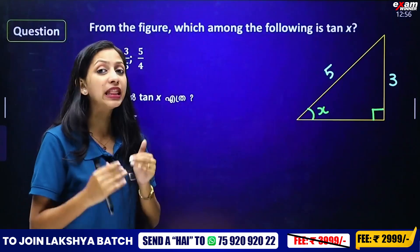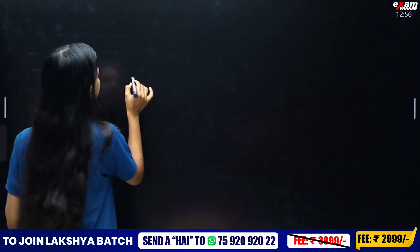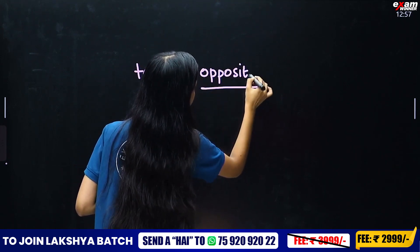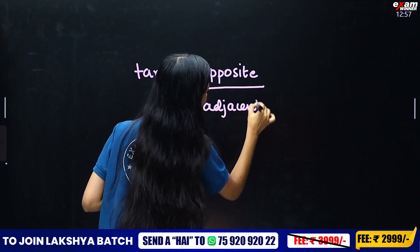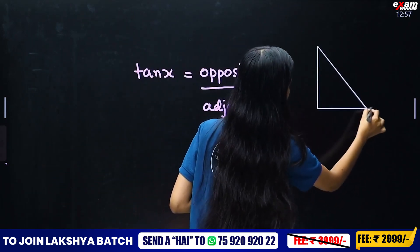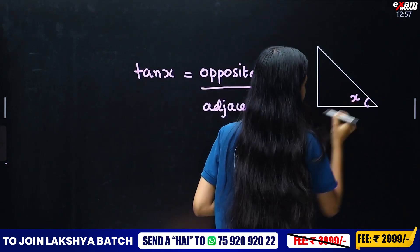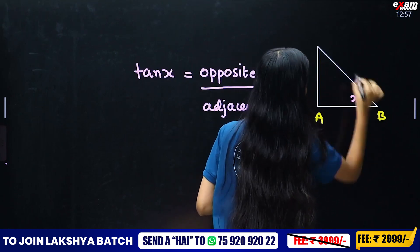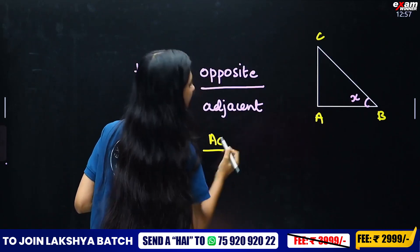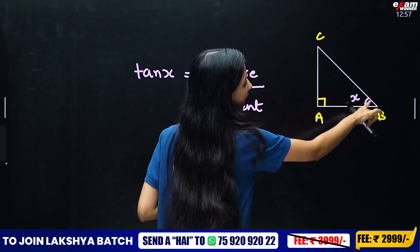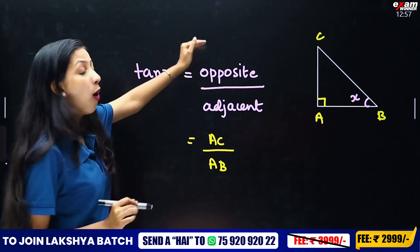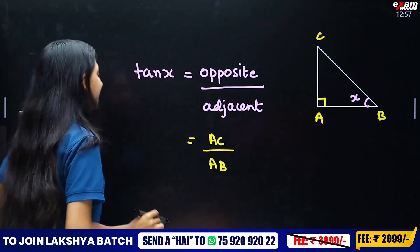We will discuss tan(x). How is tan(x) defined? Tan(x) is opposite side divided by adjacent side. Now, looking at our triangle with angle x, the opposite side is AC and the adjacent side is AC by AB — that is, tan(x) = opposite side by adjacent side.